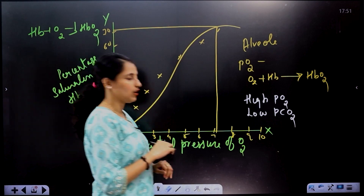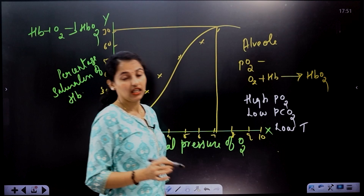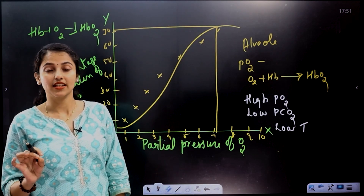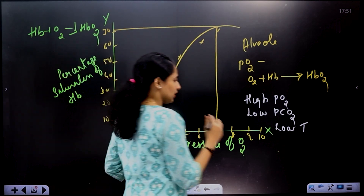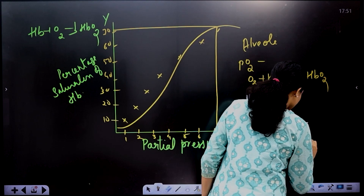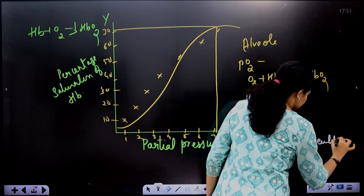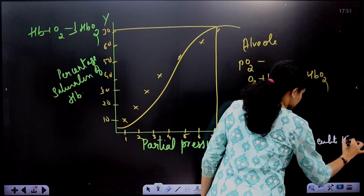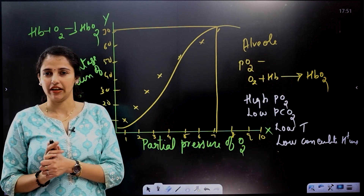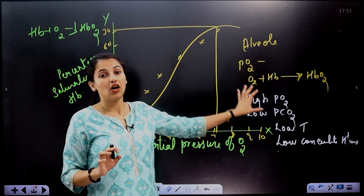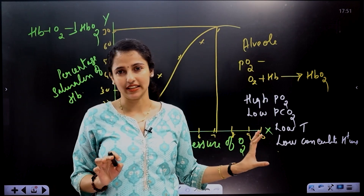Additional factors for oxyhemoglobin formation include low temperature and low concentration of H⁺ ions — meaning low acidity. These are the conditions in the alveoli that promote the formation of oxyhemoglobin.